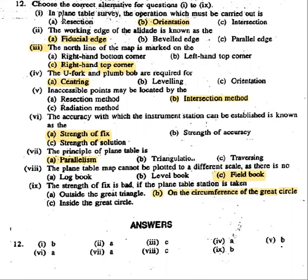First question: In the Plain Table Survey, what operation will be carried out? The working operations are: first, setting — which includes leveling the table, centering, and orientation. Third working operation: sighting the points. This is the operation.